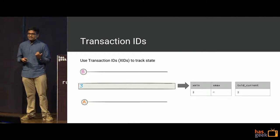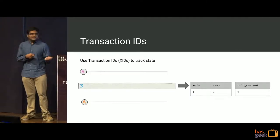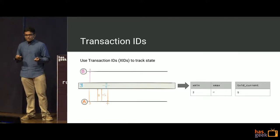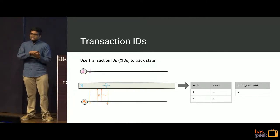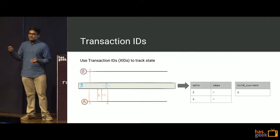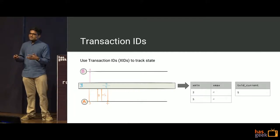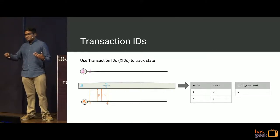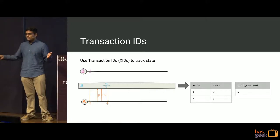Running through the same example again, there are two values: Xmin and Xmax. The table itself tells you what should be the earliest transaction which can see the record, and what should be the last transaction which can see the record. Using this sort of transaction IDs is how MVCC is handled. Transaction ID turns out to be quite crucial to the whole story here.